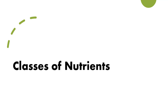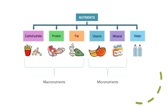Let's get into the classes of nutrients. If we take all of the nutrients available, we can put them into six different categories. Those nutrients are carbohydrates, fats, protein, vitamins, minerals, and water. The first three are considered the macronutrients, and vitamins and minerals are considered micronutrients.